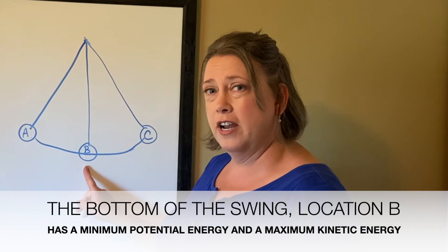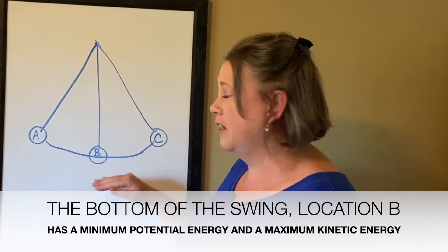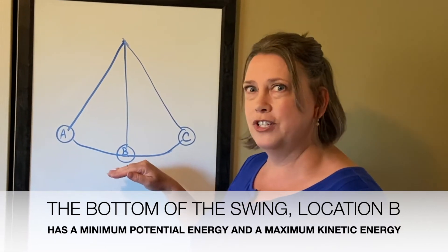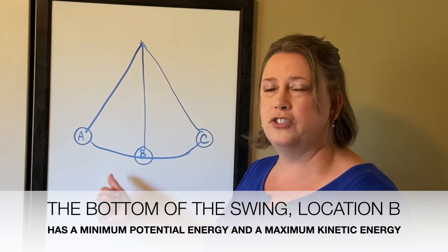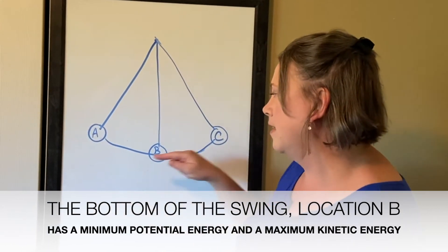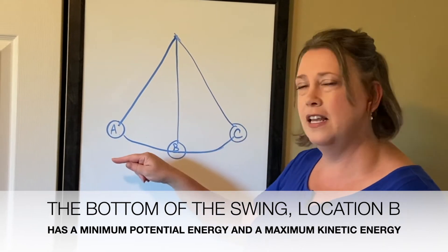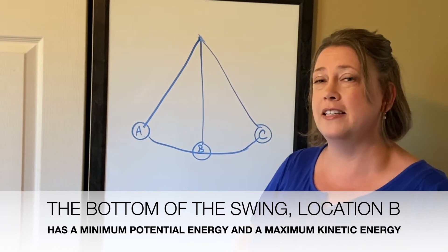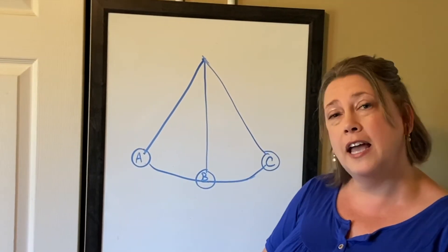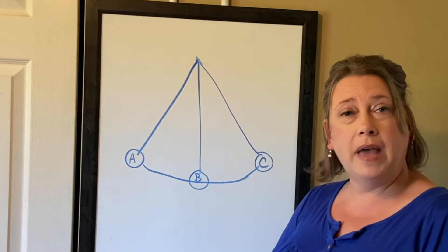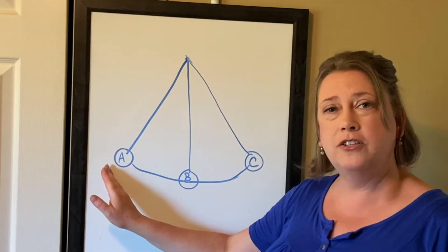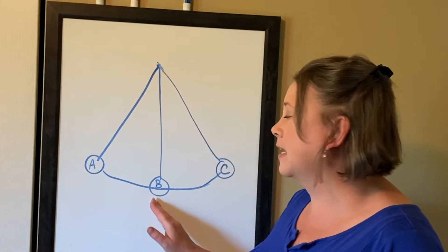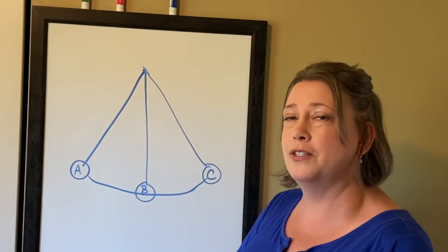Point B, on the other hand, has zero potential energy if we set that as our zero line, and its kinetic energy is a maximum there because the bob is just going to be zipping through in either the positive or negative direction. So it will have its highest velocity at point B, which means it will also have its highest kinetic energy. And that's what we're going to look at this week — we're going to compare the maximum potential energy, which should be the total energy, to the maximum kinetic energy, which also should be the total energy.